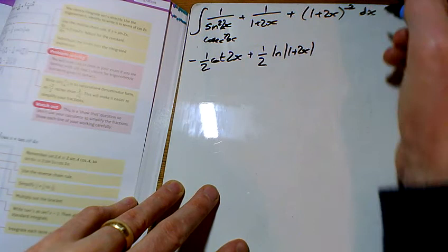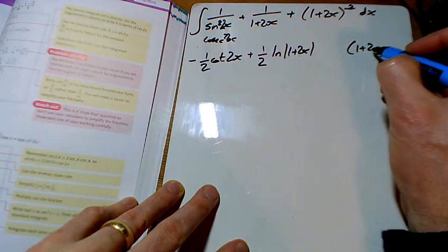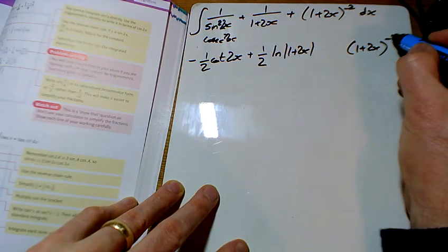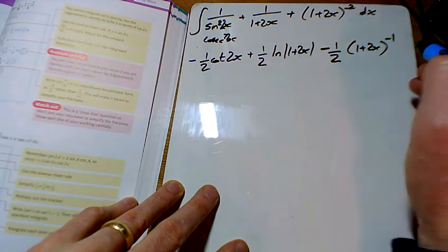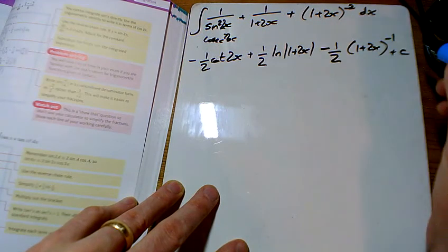And the last bit I've not written down yet, but it's 1 plus 2x all to the power of minus 2. And so the bracket stays the same, the power goes up by 1, we'll divide by the new power and the number of x's, so I've got another half coming outside there as well. And that's my answer to that one there.